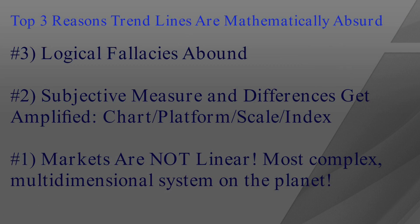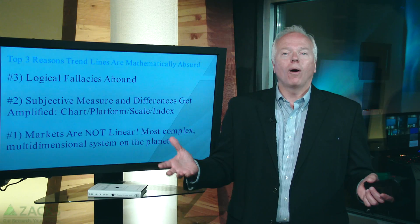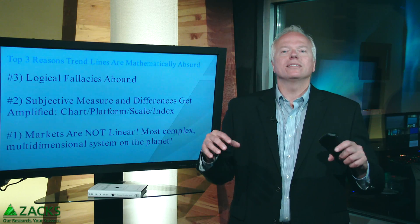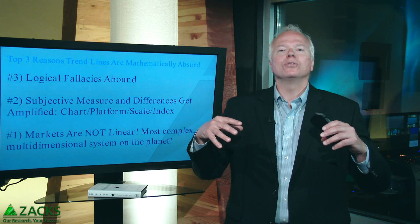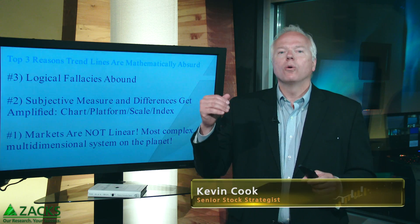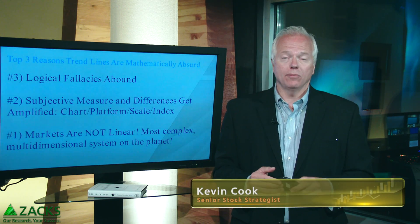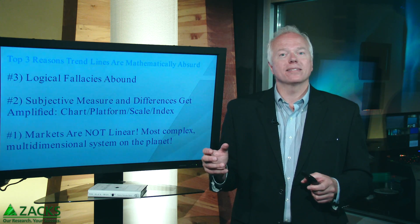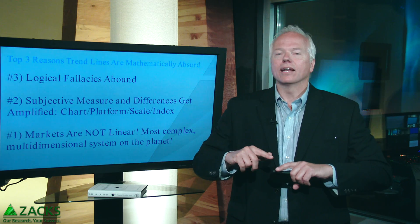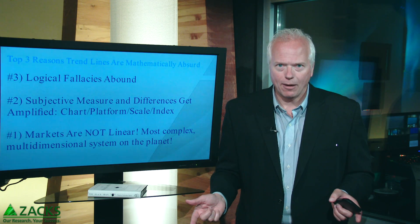But that's still not the biggest reason that trend lines are mathematically absurd. The biggest reason is that markets are not linear. They're the most complex, multi-dimensional systems on the planet, because markets have human social behavior with nearly infinite variables in them, making them an extremely complex system.